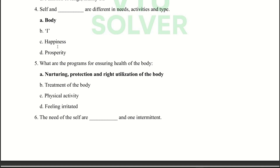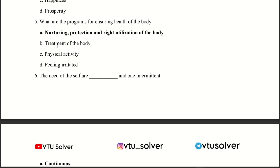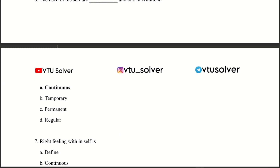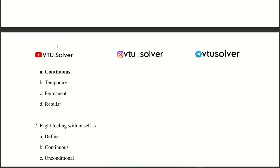Next question: Self and body are different in needs, activities, and types. Answer: Body. Next question: What are the programs for ensuring health of the body? Answer: Nourishing, protection, and right utilization of the body.